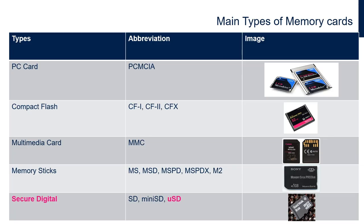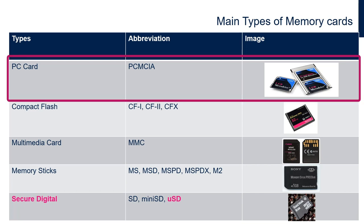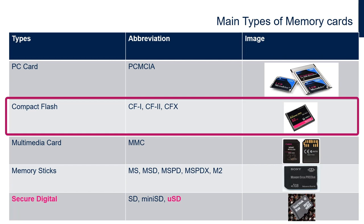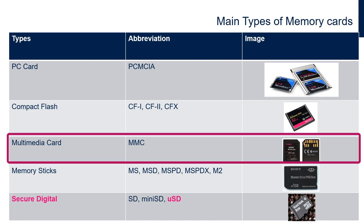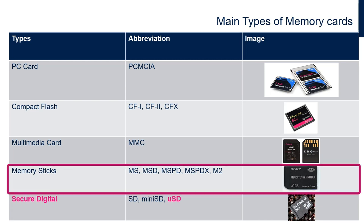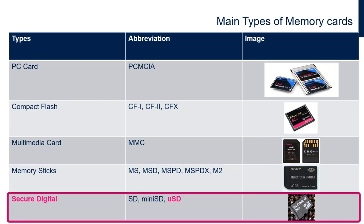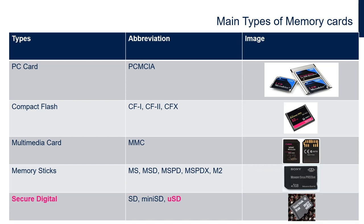Let's start by looking at the most used types of memory cards. Here are the main memories available today on the market. First, we have the PC cards or PCMCIA. Then we have the compact flash or CF. We also have the multimedia cards or MMC. We can find memory sticks or MS. And then the secure digital cards or SD card. In this video, we will be using micro SD cards which are easy to find and affordable.